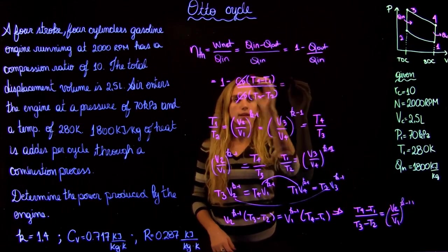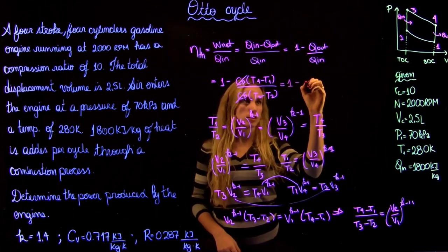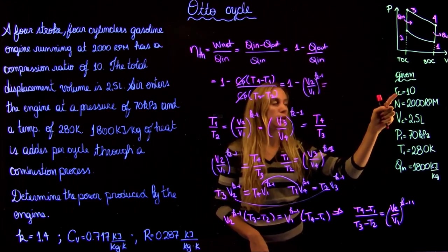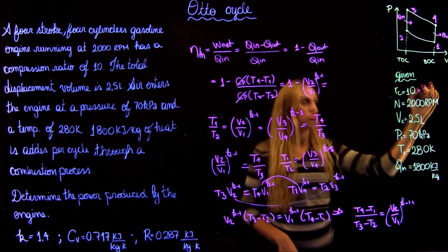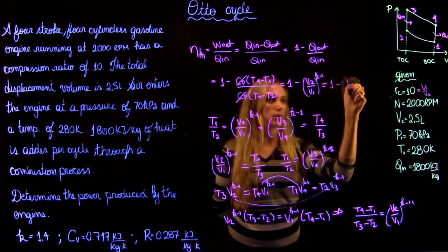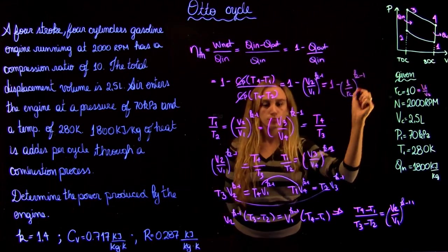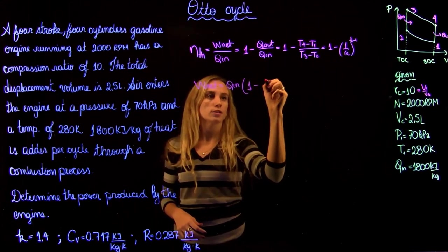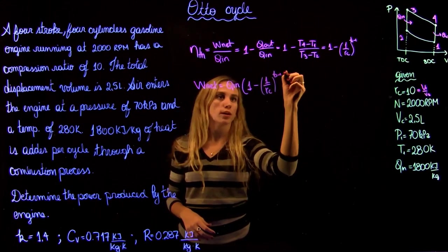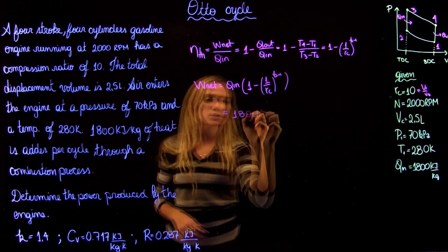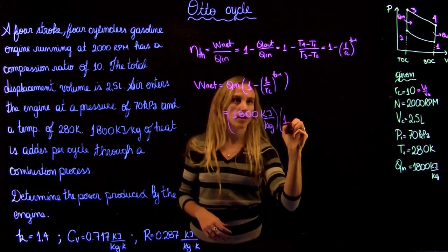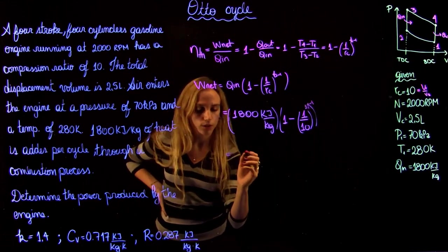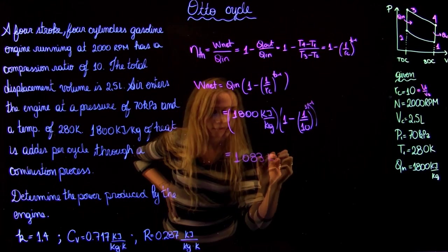We can rewrite the thermal efficiency as 1 minus (V2 over V1)^(k−1). Since the compression ratio RC equals V1 over V2, this becomes 1 minus (1/RC)^(k−1). The net work is therefore Q in times (1 minus 1/RC^(k−1)). Plugging in the numbers: 1,800 kJ/kg times (1 minus (1/10)^(1.4−1)), giving a net work of 1,083 kJ per kilogram.